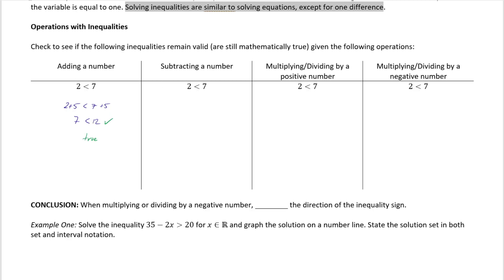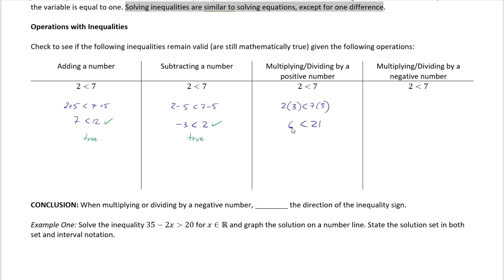Adding a number doesn't require changing the inequality sign. Let's try subtracting: 2 − 5 < 7 − 5 gives −3 < 2, which is true. No need to change the sign there either. Now multiplying by a positive number: 2 × 3 < 7 × 3 gives 6 < 21 — absolutely true. This checks out.